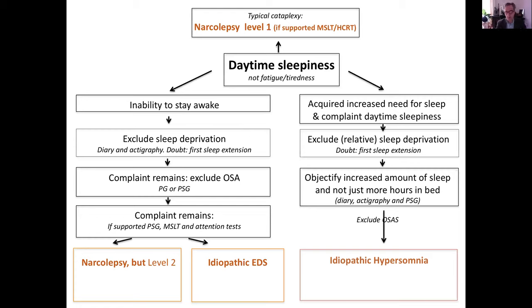So in a schedule, what to do? If there is a patient with a complaint of daytime sleepiness — this is the central complaint — when there is typical cataplexy then it must be narcolepsy level one, and of course it must be objectively defined, but if you have typical cataplexy it will hardly ever be another diagnosis. If there is no typical cataplexy and there is an increased need for sleep, then it could still be a natural long sleeper, so you need to exclude that. Sleep extension would then solve the daytime problem.